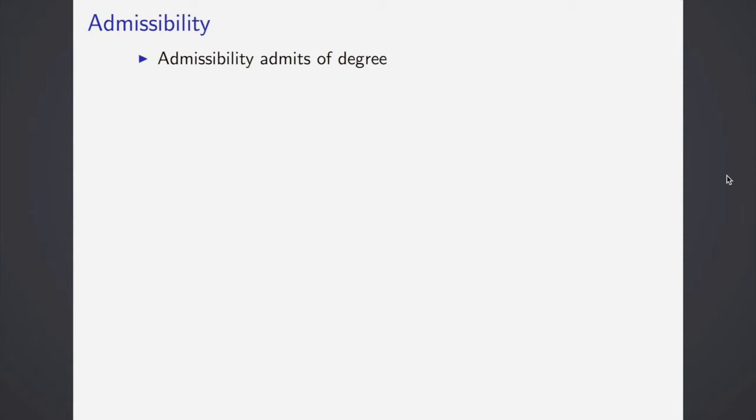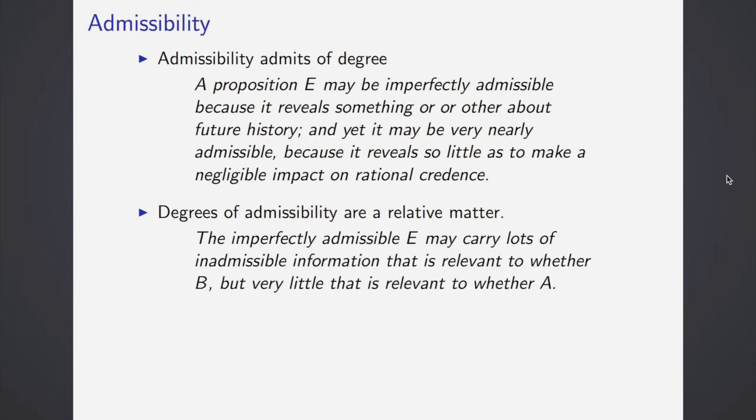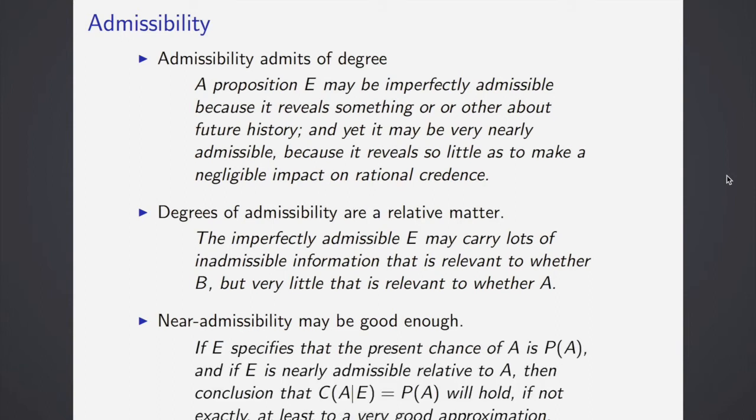What is this notion of admissibility into the credence function? It admits of degree. Lewis says that proposition E may be imperfectly admissible because it reveals something or another about future history and yet it may be nearly admissible because it reveals so little as to make a negligible impact on rational credence. Degree of admissibility is also a relative matter. And what he means is that the perfectly admissible E may carry lots of inadmissible information that is relevant to whether B, but very little that is relevant to whether A. And near-admissibility may be good enough. What he says about this is that if E specifies that the present chance of A is probability of A, and if E is nearly admissible relative to A, then the conclusion is that the credence function of A given E will equal the probability of A will hold, if not exactly, at least to a very good approximation.